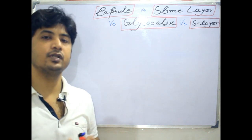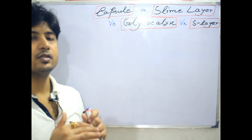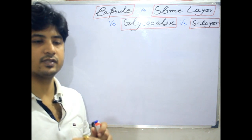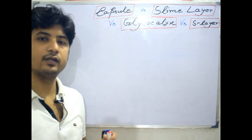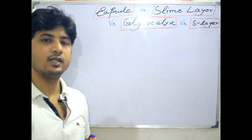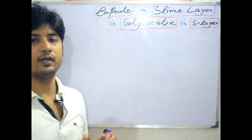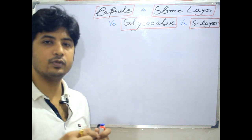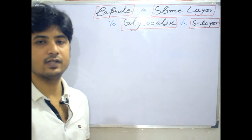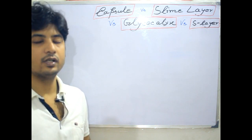Capsule is the outer structure of the cell wall. The bacterial structure is divided into several layers: first the cell membrane, then the cell wall. In case of gram positive bacteria it is peptidoglycan; in gram negative it is the cumulative effect of the peptidoglycan layer as well as the LPS layer, that is the outer membrane.